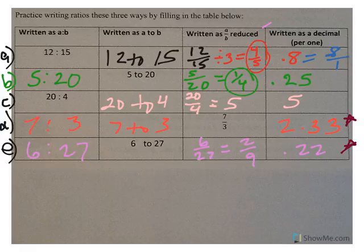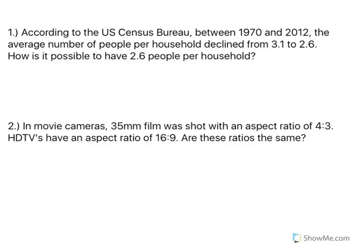All right, so check those. You'll notice in letter C, notice how our fraction here and our decimal are the same, because five divided by one is just five. And then notice I have asterisks by D and E here on the end, because those are rounded answers. There are no directions of what to round to. So I just want two decimal places.